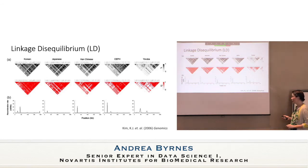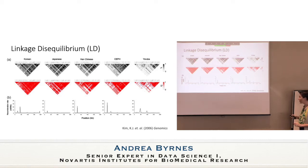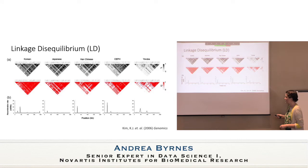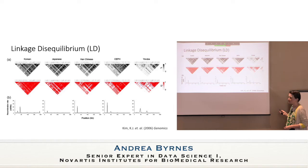This is an example of LD structure across different populations from a 2006 genomics paper. It shows a Korean population, a Japanese population, Han Chinese, CEU Caucasian individuals from Utah from the HapMap project, and Yoruban individuals also from HapMap. Just by looking, these would be different plaids — they would not all be cut from the same pattern — and yet this is the same chunk of DNA. These are two different measures of LD shown here.